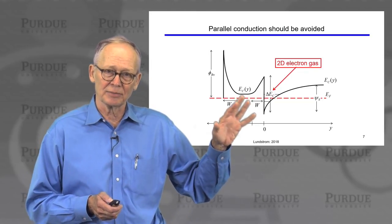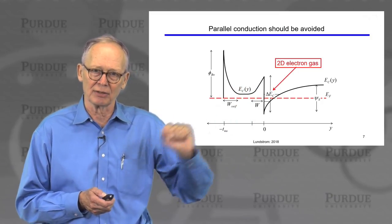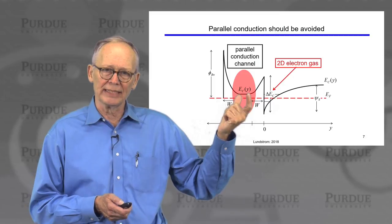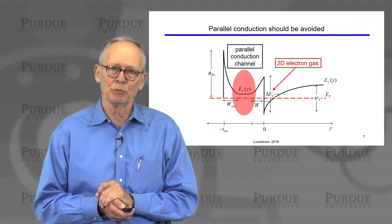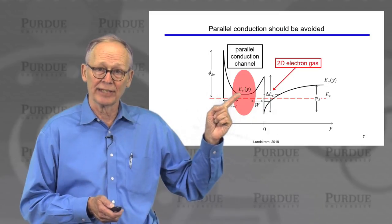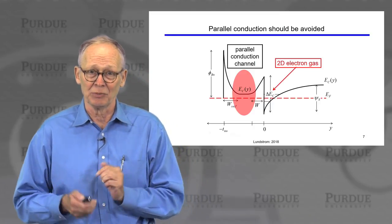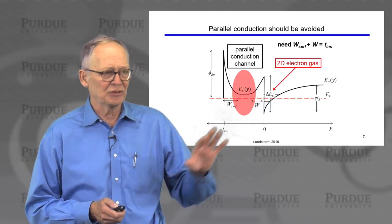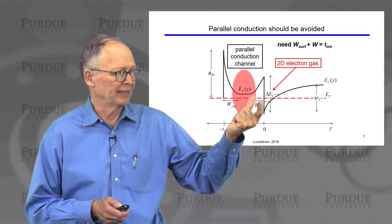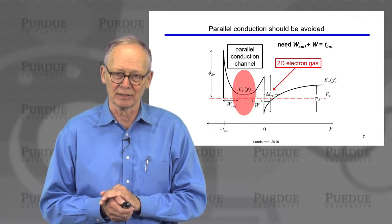When designing HEMTs, we must be careful: the 2D electron gas in the gallium arsenide is the channel. If we're not careful, there will be an undepleted n-type region in the wide-bandgap layer in parallel with the high-mobility channel — those low-mobility electrons would degrade performance. Careful design ensures that the depletion width from the Schottky barrier at the surface plus the depletion width at the wide-bandgap/small-bandgap interface add up to the full thickness of the wide-bandgap layer, eliminating any undepleted parallel conduction path.